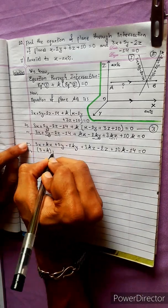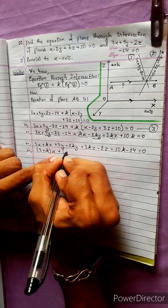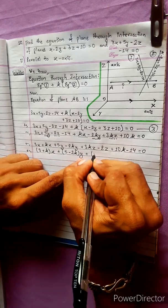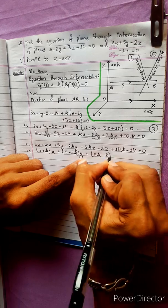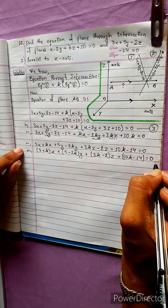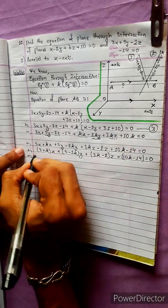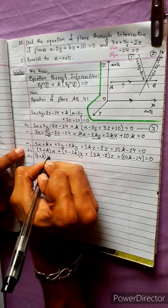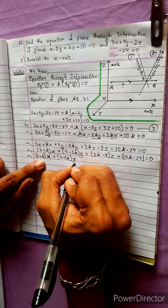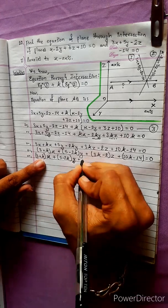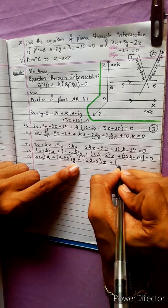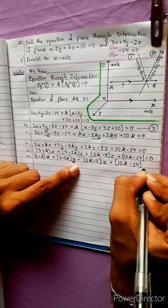Taking common factors: (3 plus k)x plus (5 minus 2k)y plus (3k minus 2)z plus (10k minus 14) equals zero. This is Equation 3, the combined plane equation.